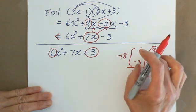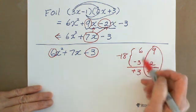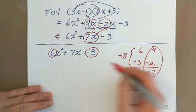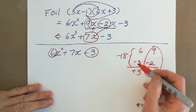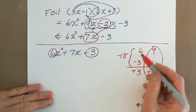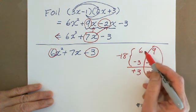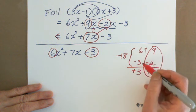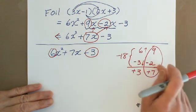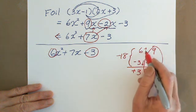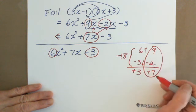To recap: first multiply the first coefficient and last constant to get negative 18, then use those two reference numbers — adding them gives positive 3, but we need positive 7. That tells us the difference is too small. We need to make one number greater and the absolute value of the other smaller. 7 and 8 don't work; 9 divided into 18 gives 2, so we find positive 9 and negative 2.